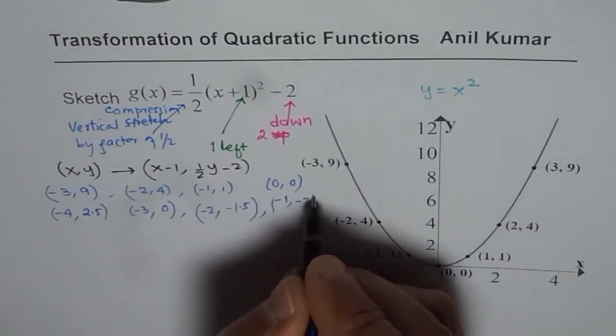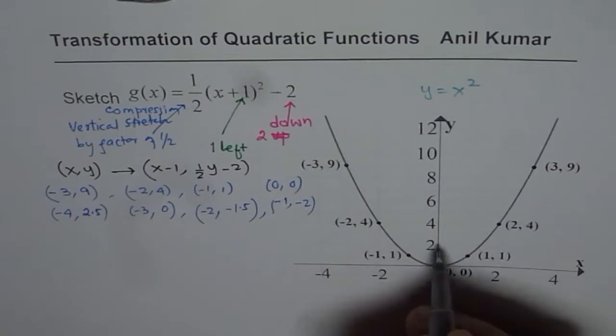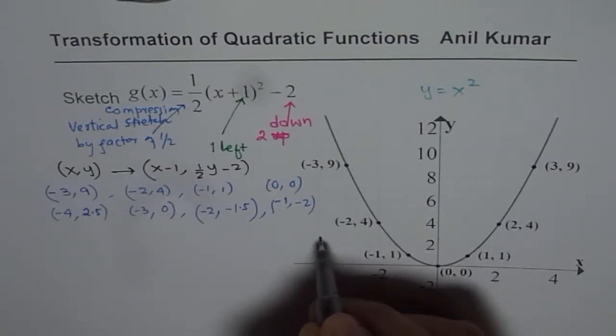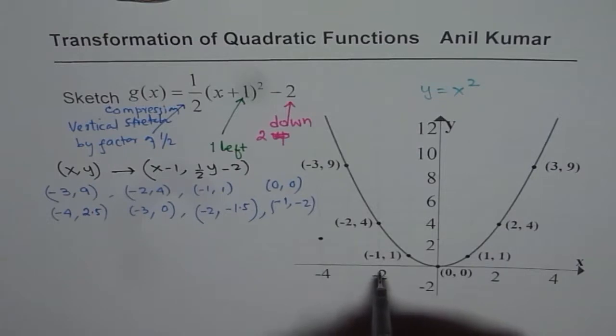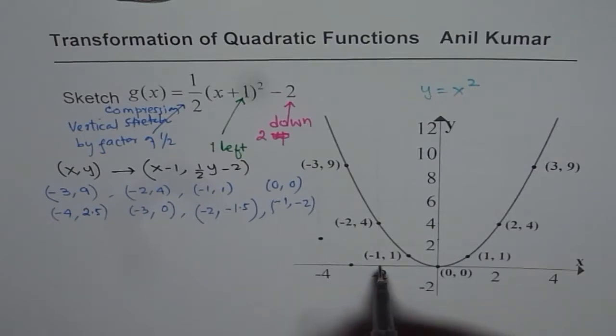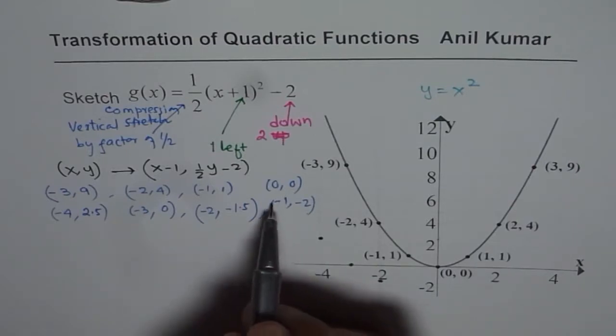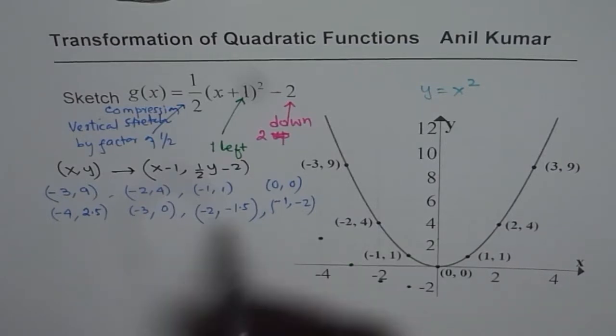So we get these set of points. So let's plot these points first. (-3,9) moves to (-4,2.5). So -4, 2.5 is kind of here. Then (-3,0). So at -3, we get 0. (-2,-1.5). At -2, this is -1 and that is -1.5. At -1, we have -2. So at -1, the value is -2 for us. We got these set of points.